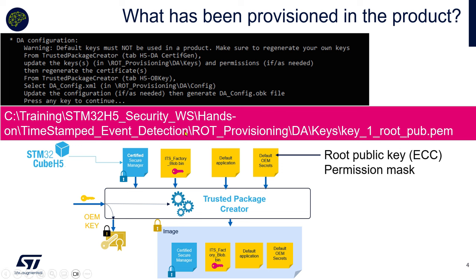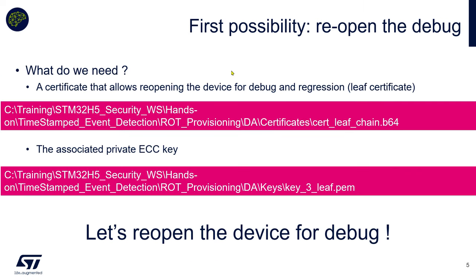Let's come back to what was provisioned in the product. We have provisioned a root public key in elliptic curve format and a permission mask — that was done by default. This public key is located in the debug authentication keys directory. Now what can we do? We can reopen the debug. Reopening the debug means going from a closed device and being able to reopen the debugger to analyze the device.